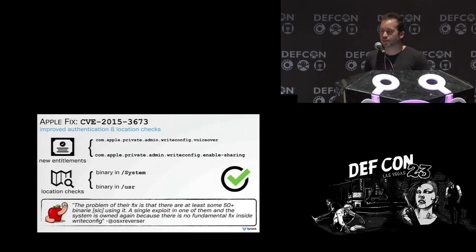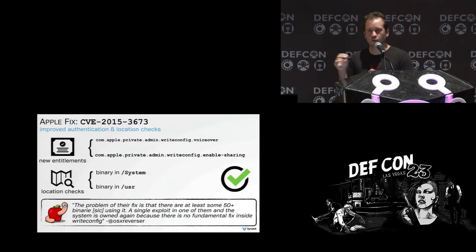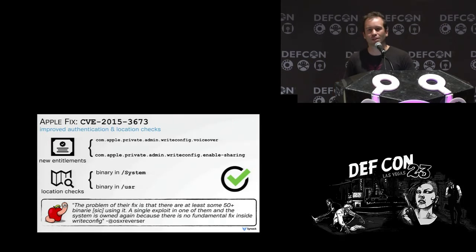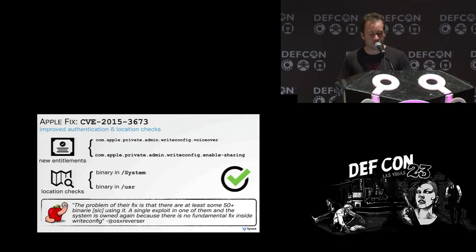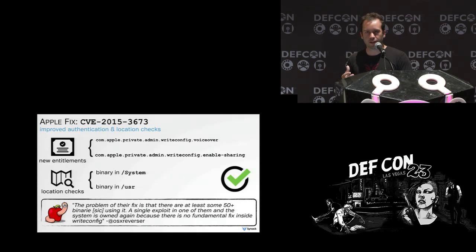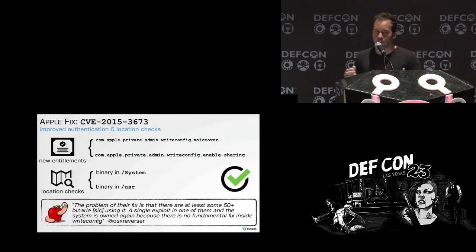Looking at Apple's most recent patch: they added extra private entitlements for more fine-grained control. Most importantly, they say the binary connecting has to live in either /system or /usr — both owned by root. So our attack is generically thwarted: we can't copy out these applications, change anything, or put plug-ins in these directories because they're owned by root and we don't have root. I don't see any immediate issues with this patch. But as Pedro states, the fundamental issue is there are at least 50-plus entitled binaries still allowed to talk to the XPC service — a single exploit in any of them and the system is owned again because there's no fundamental fix inside writeconfig.